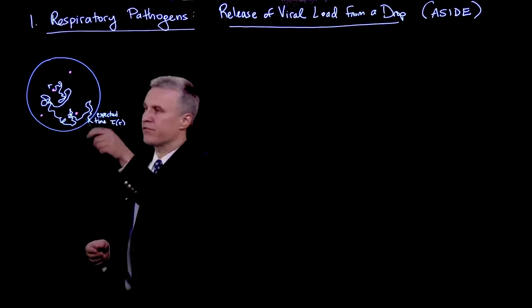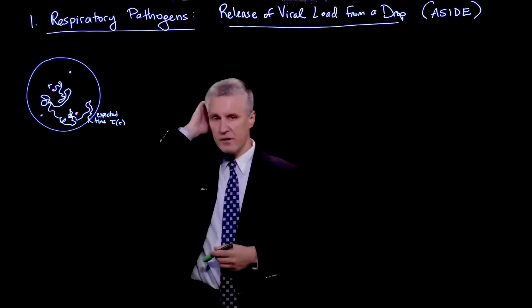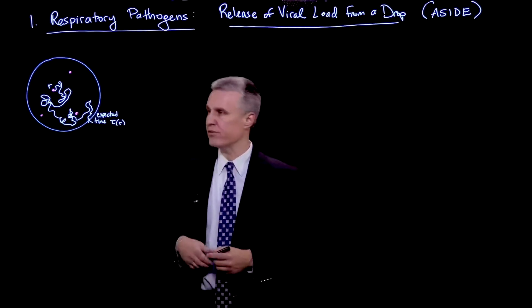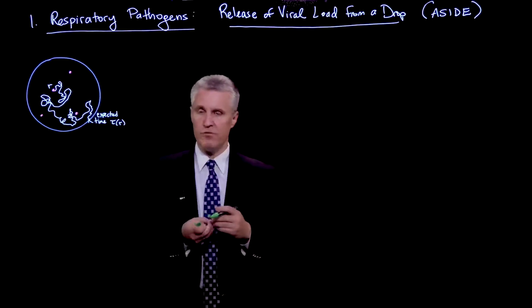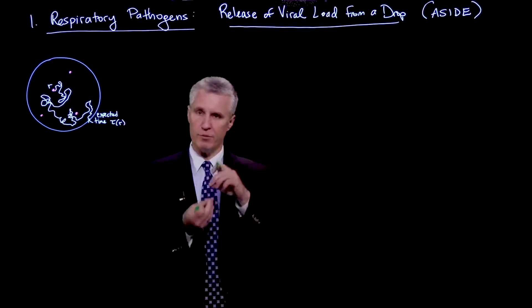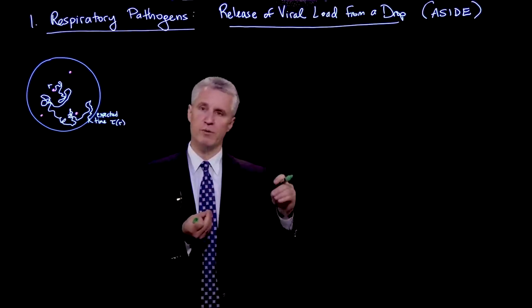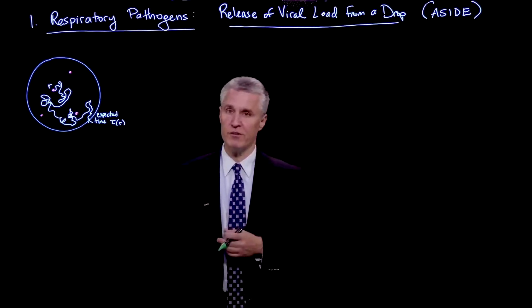And this white path is showing how such a virion would go from its initial position r, let's say as a radial position, to the boundary. Now, the general problem of finding the expected first passage time from a point inside a domain to a boundary is a classical problem in the theory of stochastic processes and random walks.